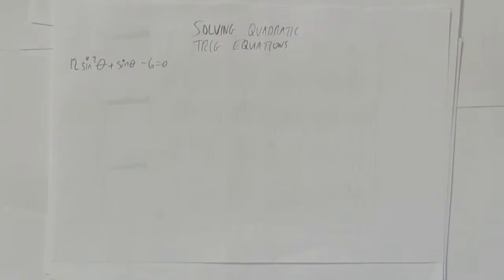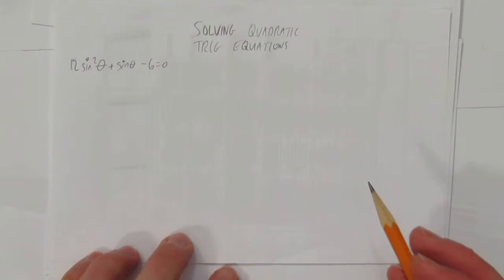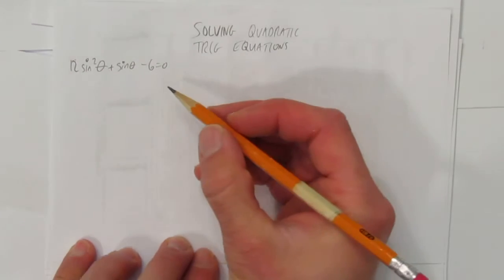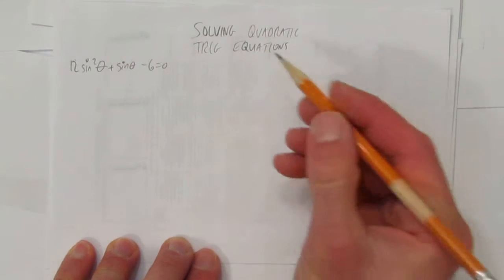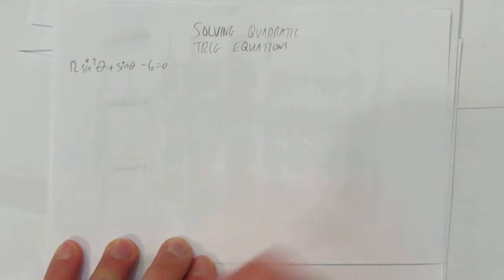In this video we'll look at solving quadratic trig equations. So the equation given is 12 sine squared theta plus sine theta minus 6 equals 0. And some people will look at that and have no idea where to start. It can be confusing because there's a lot to do and not necessarily clear what to do.